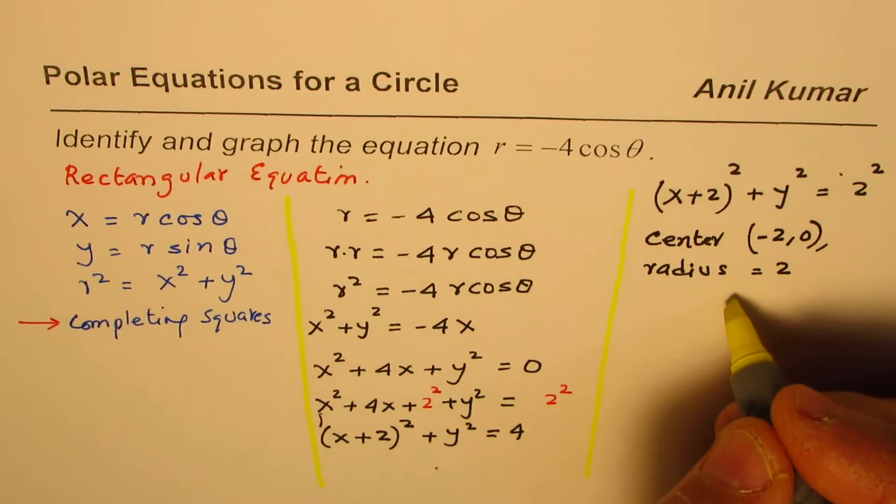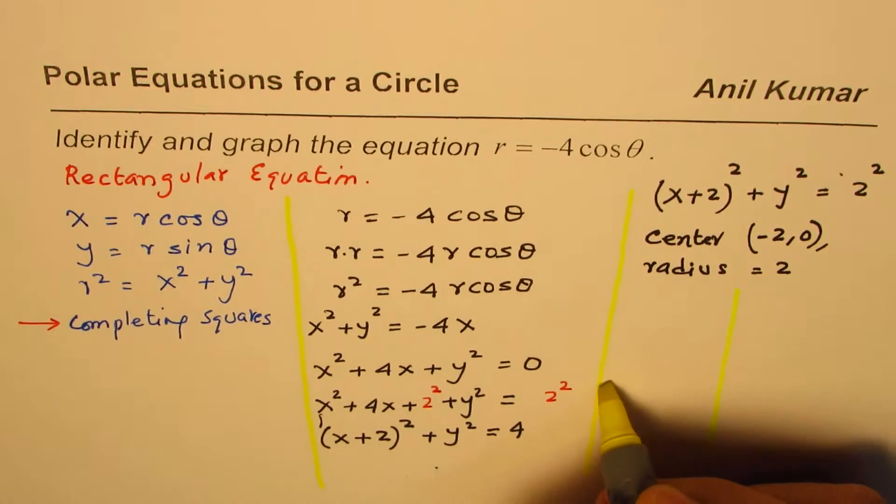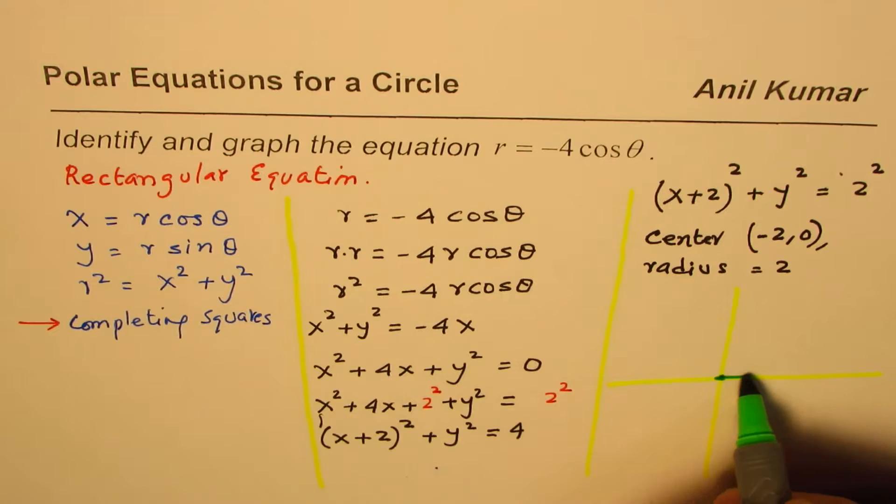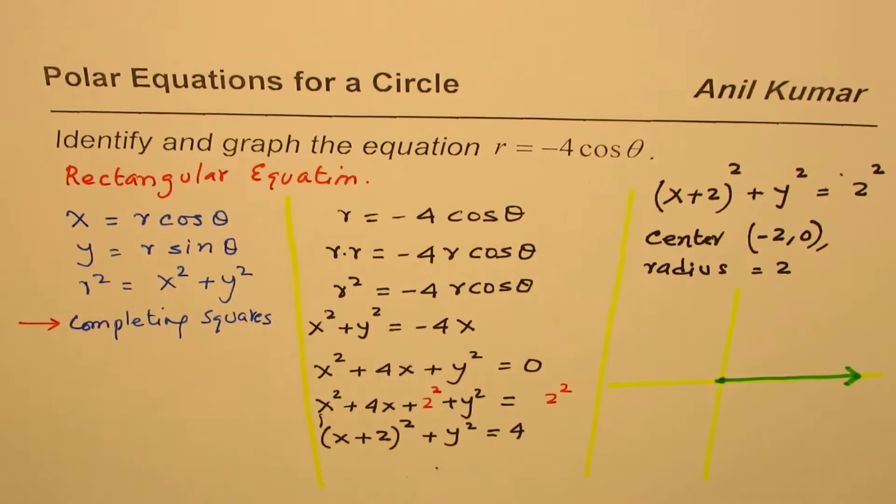Now, this was a polar equation given to us. So, let us sketch it on a polar graph. So, polar graph has a pole here and the polar axis, which points towards the right side.